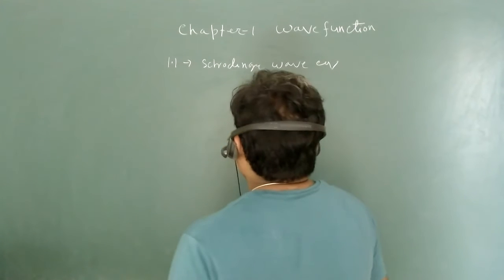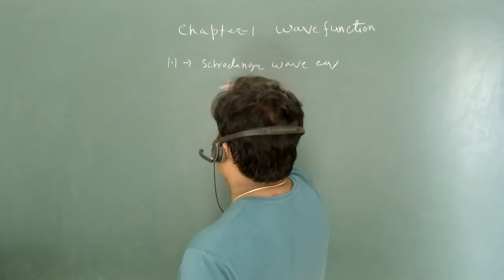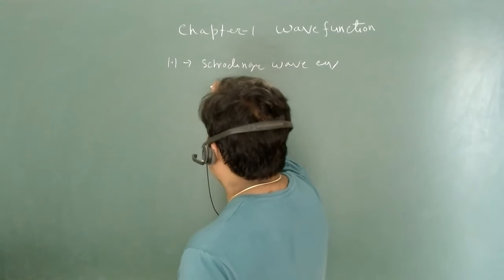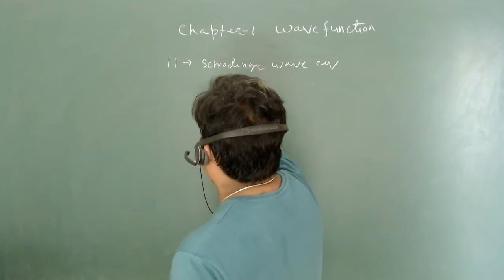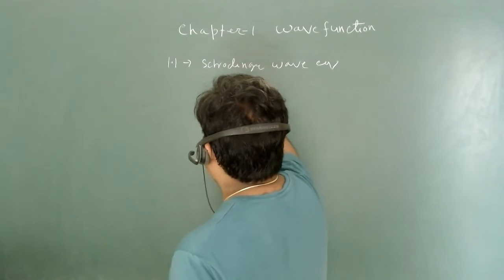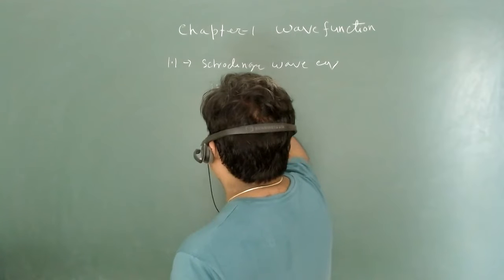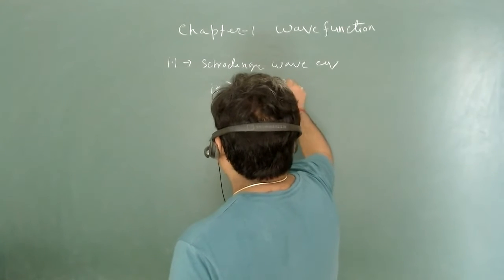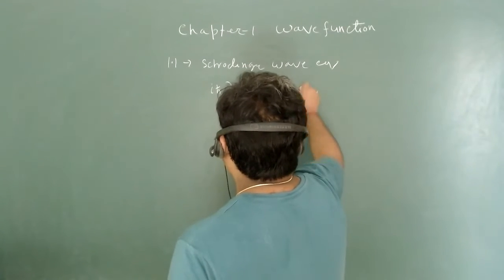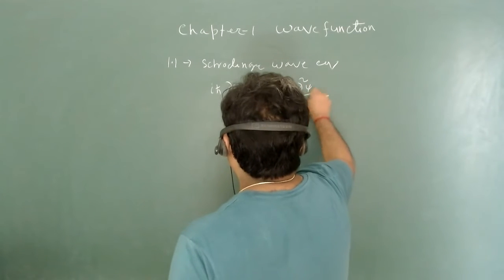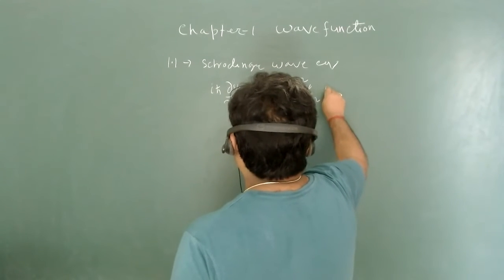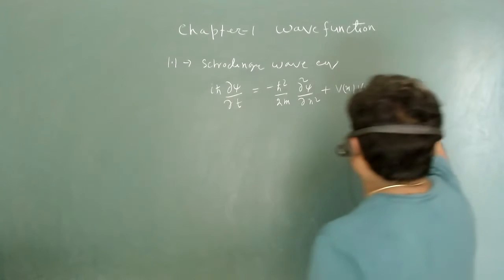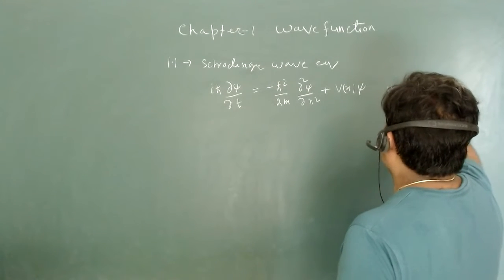In this section, we have discussed the Schrödinger wave equation, which is given by: iℏ ∂ψ/∂t = −ℏ²/2m · ∂²ψ/∂x² + V(x,t)ψ, where ψ is identified as the wave function.